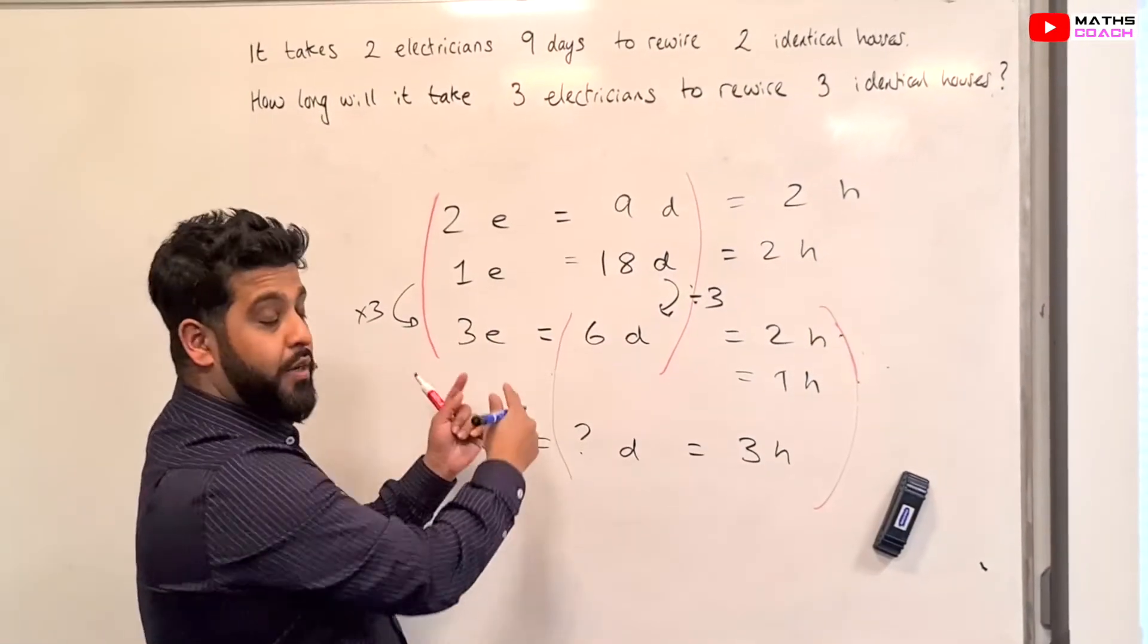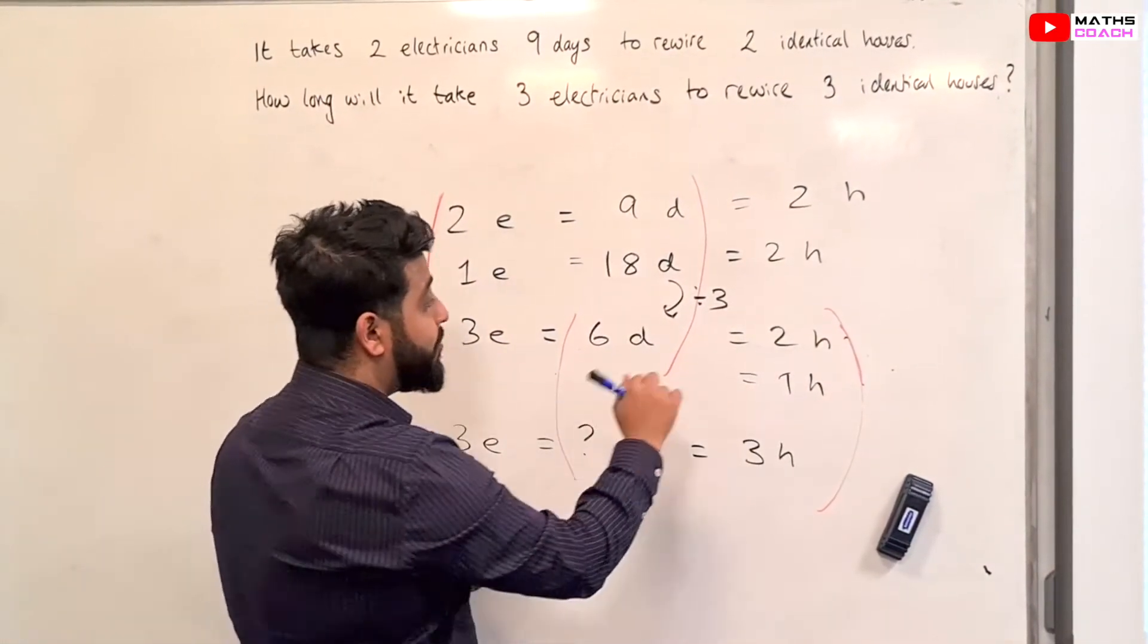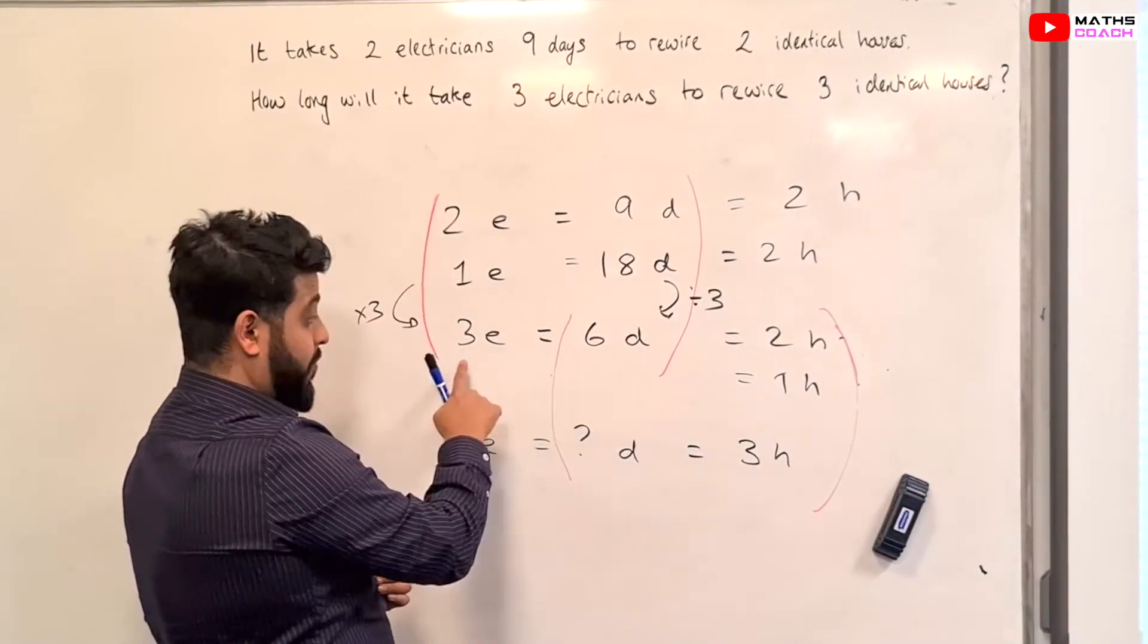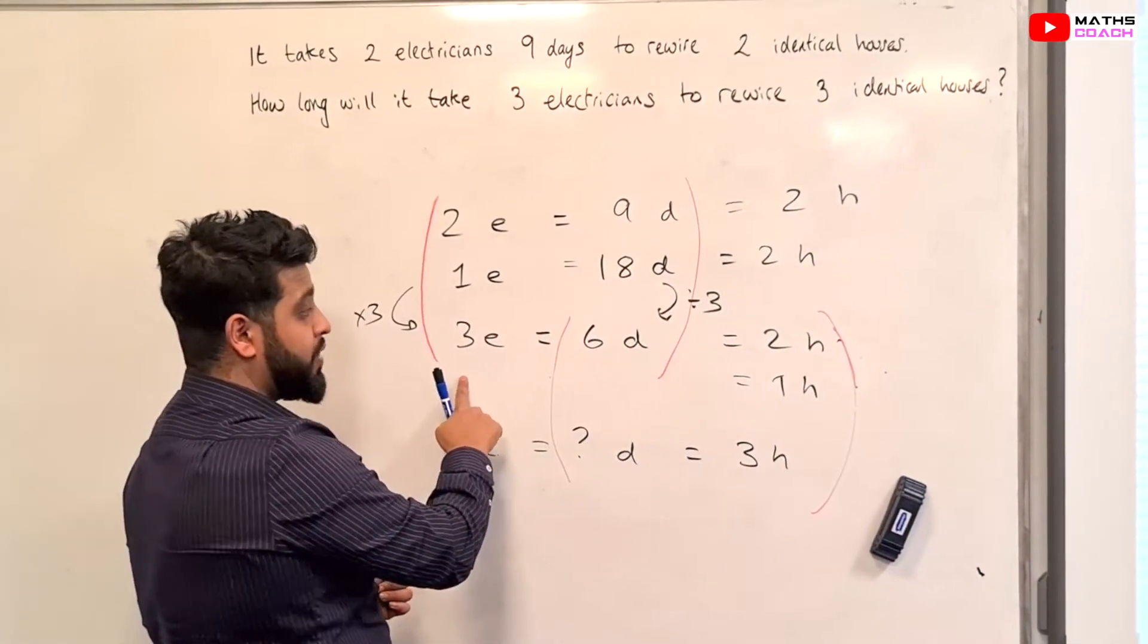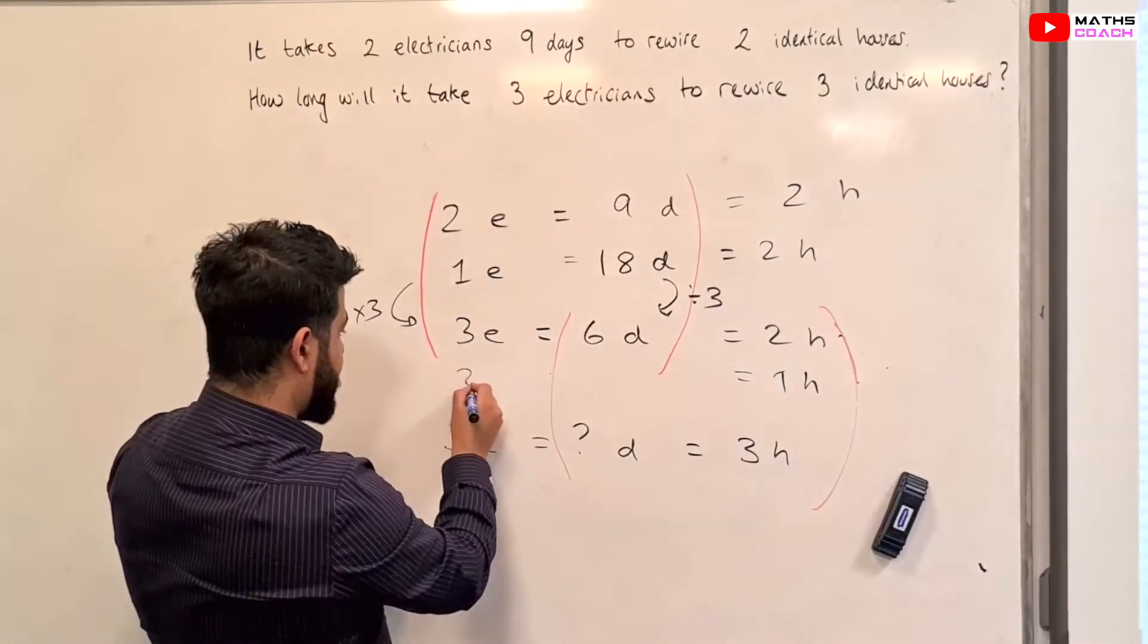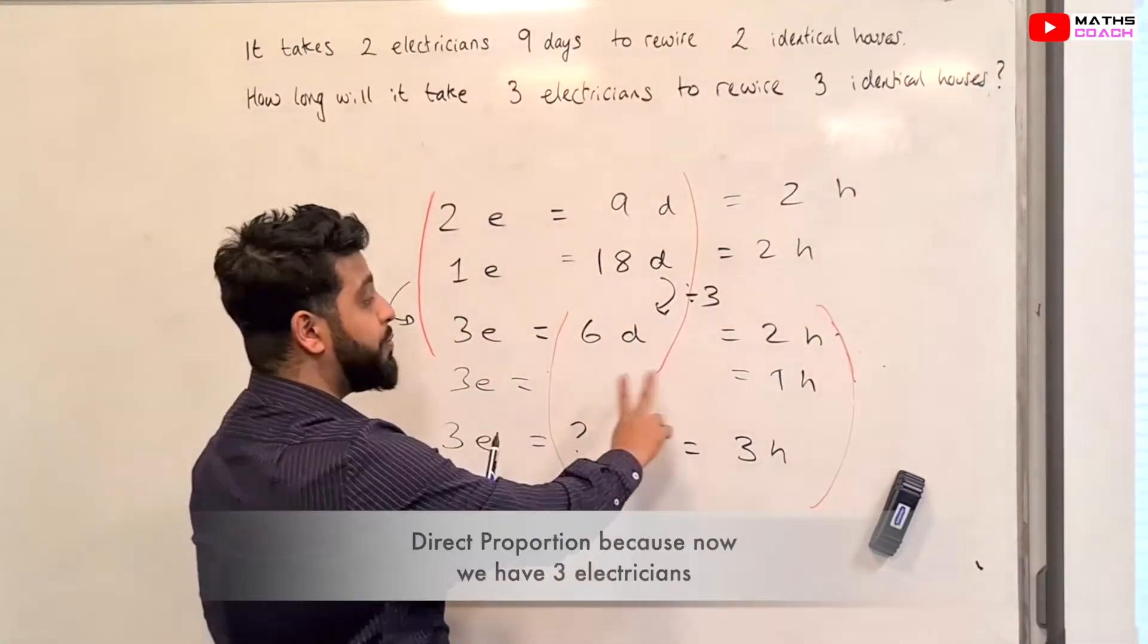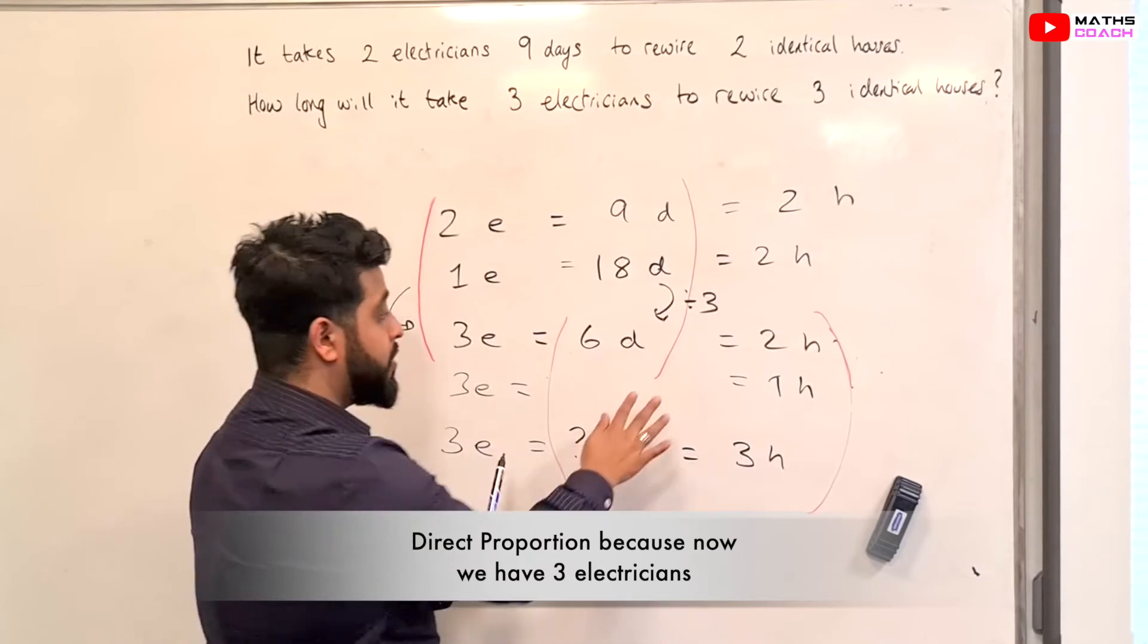Unlike the previous example, which was indirect proportion, the relationship between the number of houses and the number of days for 3 electricians is going to be directly proportional.